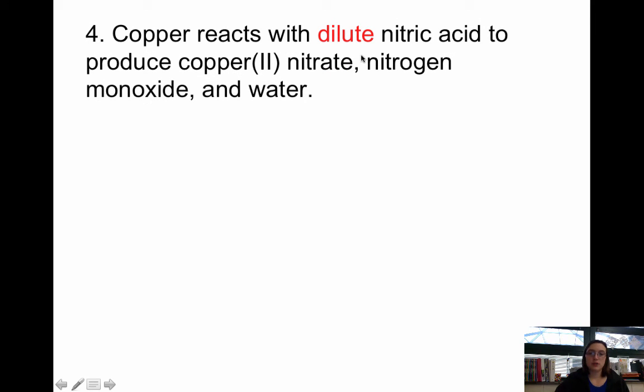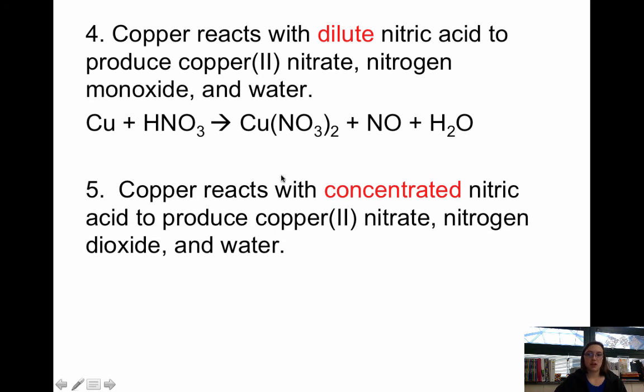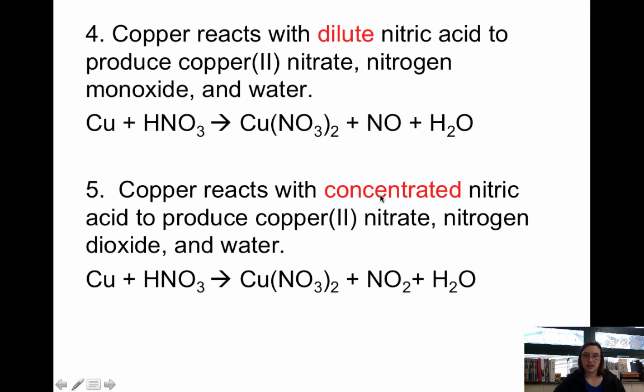Then you have copper reacting with dilute nitric acid. There is a difference between dilute and concentrated, so make sure you know the difference. If copper reacts with dilute nitric acid, you make copper 2 nitrate, nitrogen monoxide, and water. If copper reacts with concentrated nitric acid, there's a difference. The difference is you make copper 2 nitrate, nitrogen dioxide, and water. Know the difference between dilute and concentrated. You don't have as much oxygen being formed if it's dilute. You have one more oxygen being formed within the NO2 if it's concentrated.